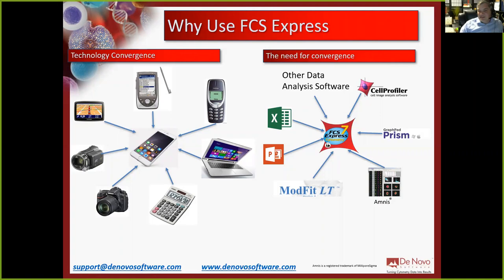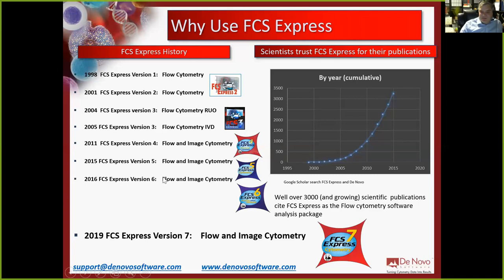Imagine moving a gate in your flow cytometry software and everything in Prism and Excel updates — your bar plots, graphs — no more copying and pasting between software packages. FCS Express has been around over 20 years, we're on version 7. Everyone at Sloan Kettering has access to version 7. There's also a brand new update released this week — especially if you're doing spectral cytometry, this new version handles spectral unmixing for you.